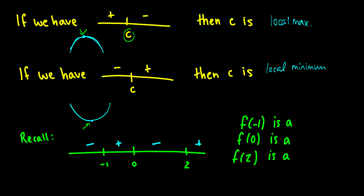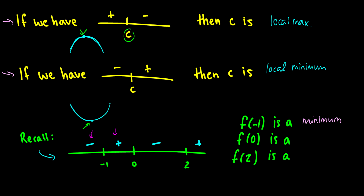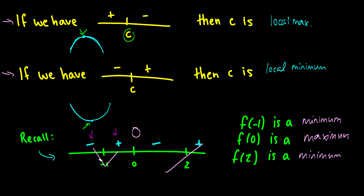From the previous example's chart, we see a change from negative to positive at x = -1, making it a local minimum. At x = 0 there is a change from positive to negative, so it is a local maximum, and at x = 2 there is a change from negative to positive, making it a local minimum. If the sign doesn't change — say positive to positive — then there is no maximum or minimum at that point.